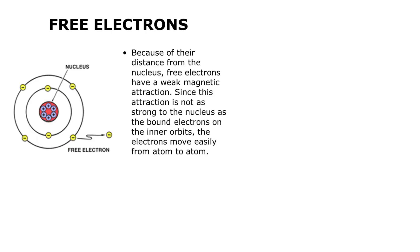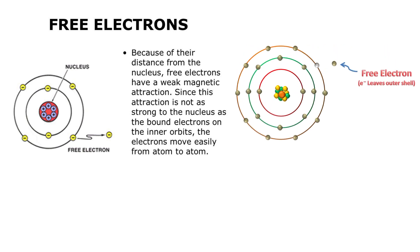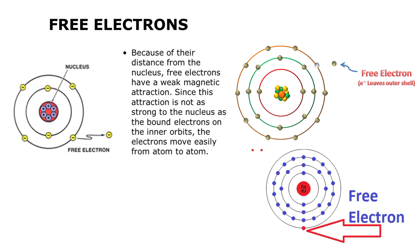Now let's see what free charges are. When an electron is provided with energy, that energy will push the electron present at the outermost orbit of the atom. Then there will be no Coulombic force of attraction between the nucleus and that outermost electron, so this is known as a free charge.